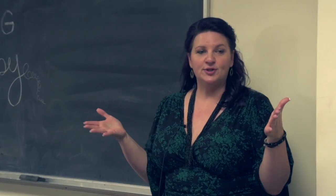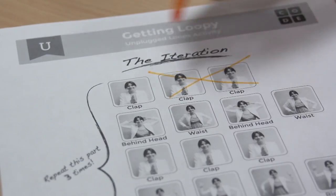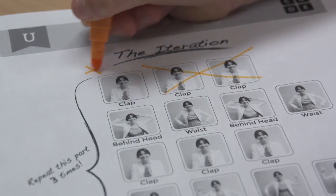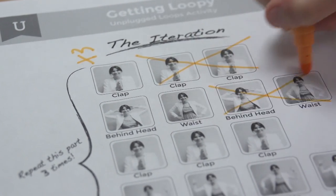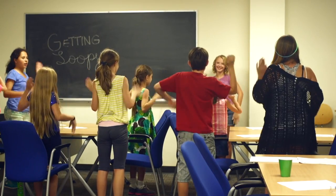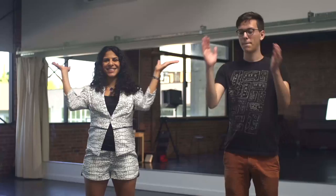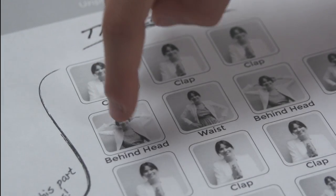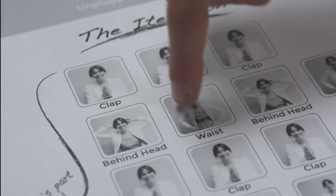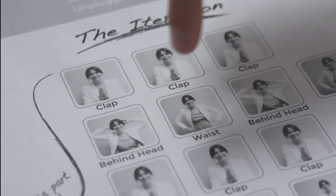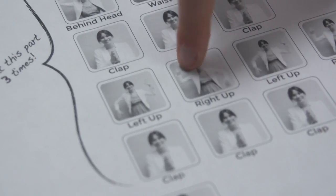We're going to learn about loops using a dance. You will learn a couple of easy steps and then repeat them over and over to complete the dance. Here are the steps we need to learn: clap your hands, put your hands behind your head, put your hands on your waist, lift your left hand up, lift your right hand up.